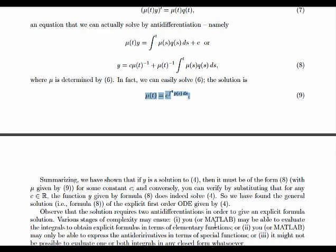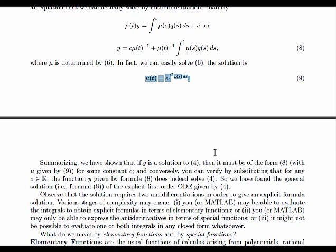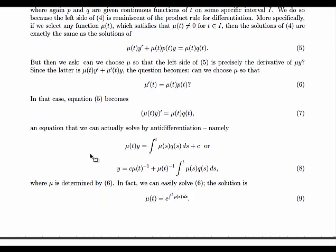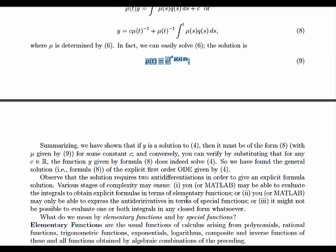Summarizing what we've just said: if you're looking for a solution to this differential equation, then what has to come out is a solution of this form eight, equation eight, where μ is given by equation nine. And conversely, if you specify μ by equation eight, where μ is given by equation nine, then in fact y is a solution to the original linear differential equation. So we have found the general solution to the first-order linear differential equations. Here's our equation. The general solution is this expression for any constant c, where μ is given by this expression here.